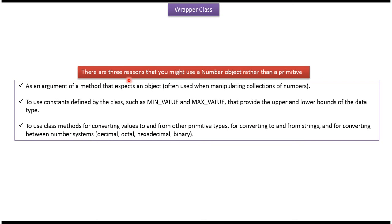There are three reasons we might use a Number object rather than a primitive datatype: as an argument of a method that expects an object; to use constants defined by the class such as MIN_VALUE and MAX_VALUE; and to use class methods for converting values to and from other primitive data types, for converting to and from strings, and for converting between number systems.